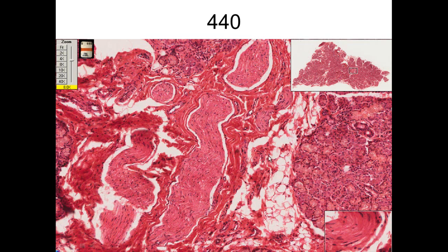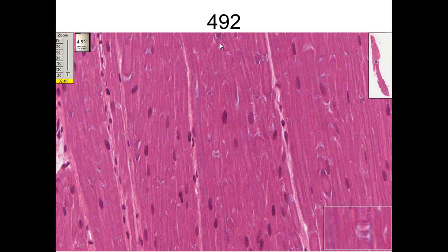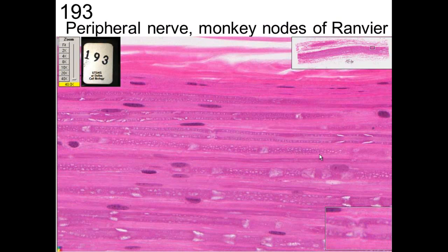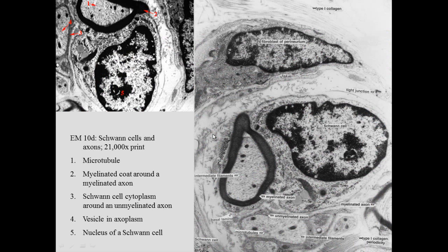We can see the perineurium going around each of these, which is the blood-nerve barrier. In this slide we can see myelinated axons, and this is the cleft between two adjacent myelin sheaths. In a myelin sheath the Schwann cell wraps around the axon, so this is a node of Ranvier, as opposed to the Schmidt-Lanterman clefts that run at an angle. You can see the axon going down through the center, right beyond the node of Ranvier.